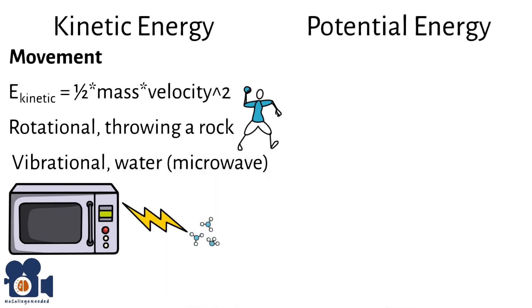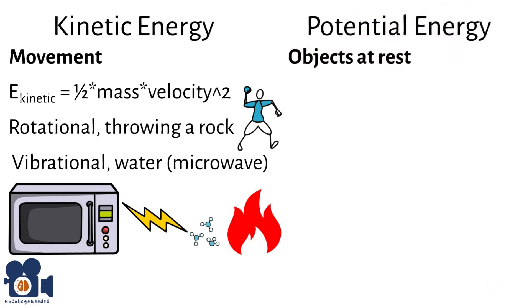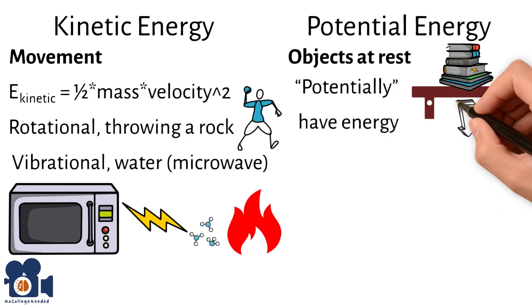Potential energy is a kind of opposite to kinetic as it pertains to objects at rest. The best way to think of it is that these objects potentially have energy, such as a book on a shelf. If the shelf breaks, that book is coming down with energy.